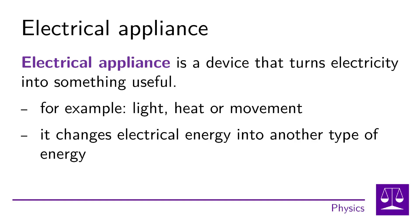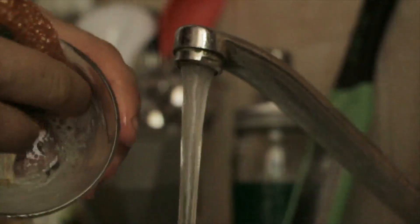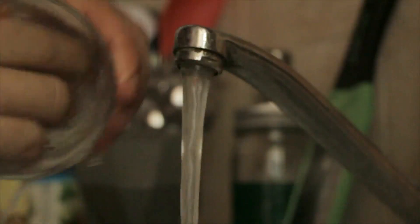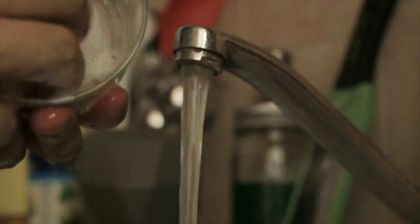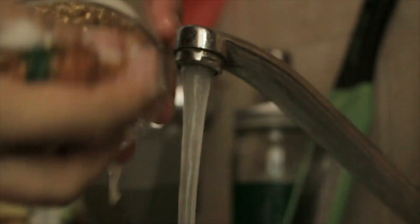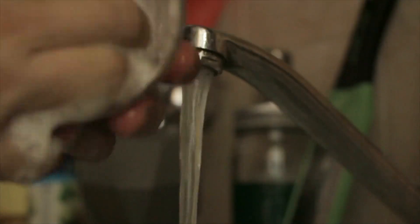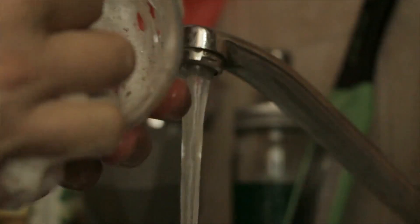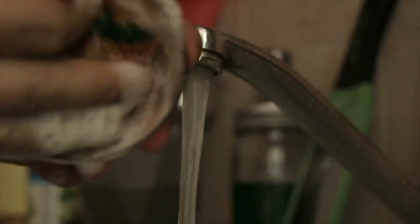What an appliance does is that it converts electricity into another type of energy to facilitate or improve many activities. For example, it is much easier to use a dishwasher to wash dishes than to wash those dishes in the sink. Not to mention how physically demanding it is to do laundry without a washing machine.